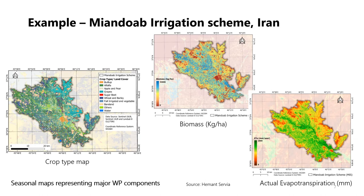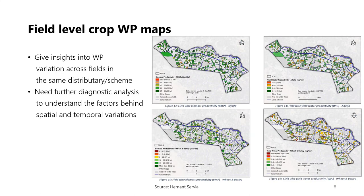An example showing different components of remote sensing-based monitoring of water productivity comes from the Mianda Irrigation Scheme in Iran. The first step is to develop a good crop type map representing the scheme for a season. The major crops are alfalfa, wheat, barley, and there are many orchards. Implementing models like SEBAL or PySEBAL gives actual evapotranspiration, and a light use efficiency-based model gives biomass — specifically above ground biomass production in kilogram per hectare. Finally, water productivity is computed using the ratio of biomass to actual evapotranspiration.